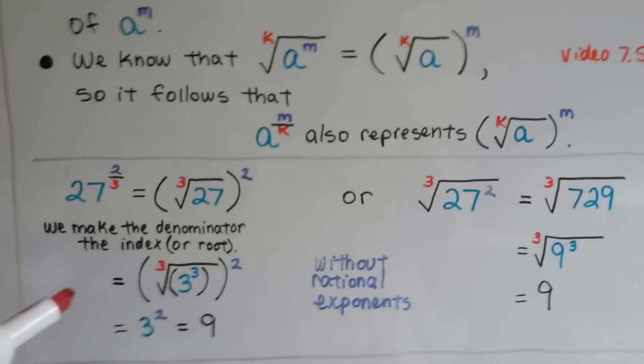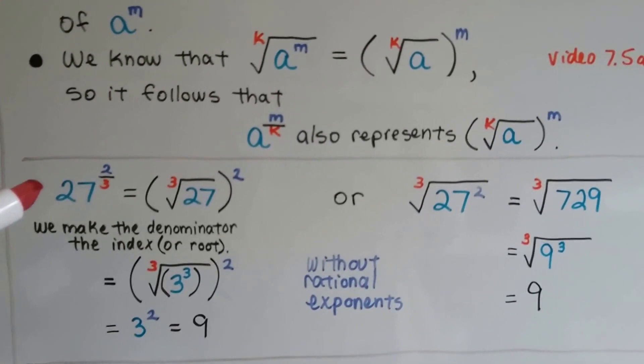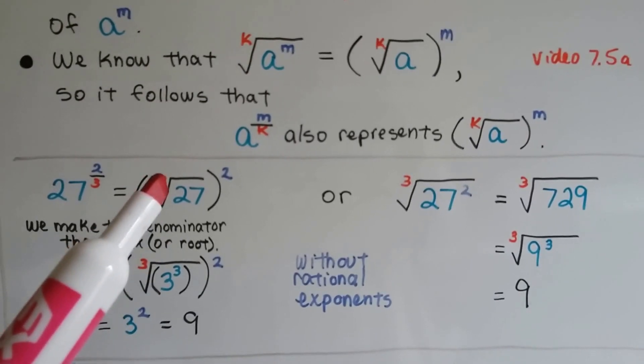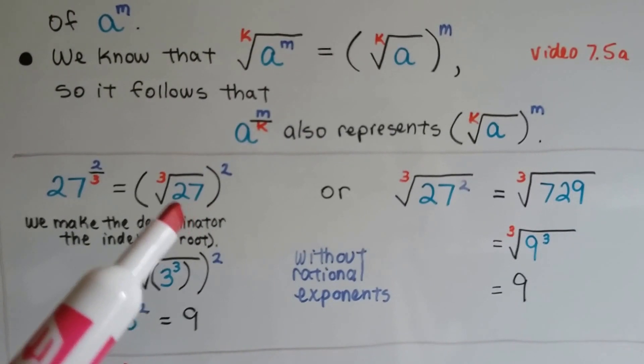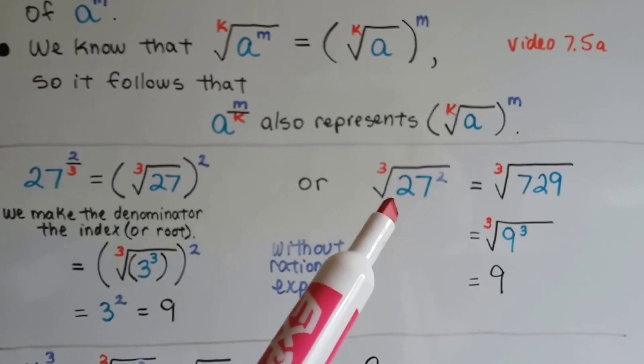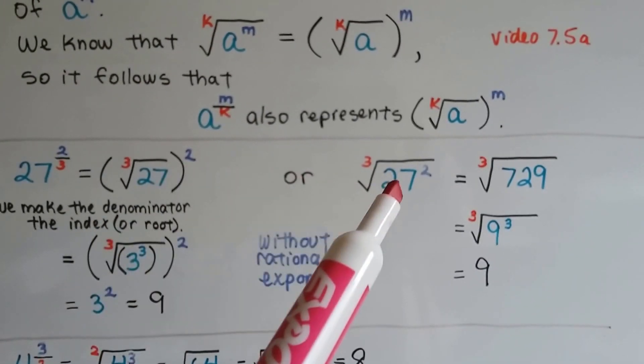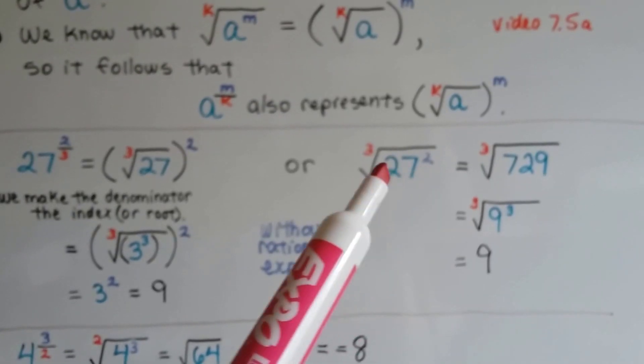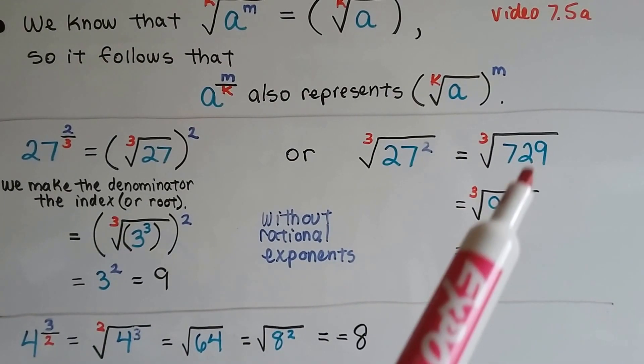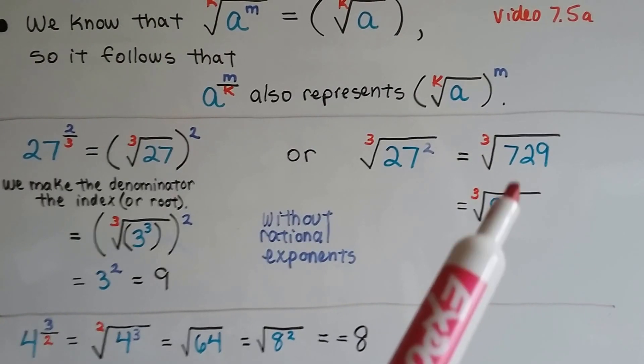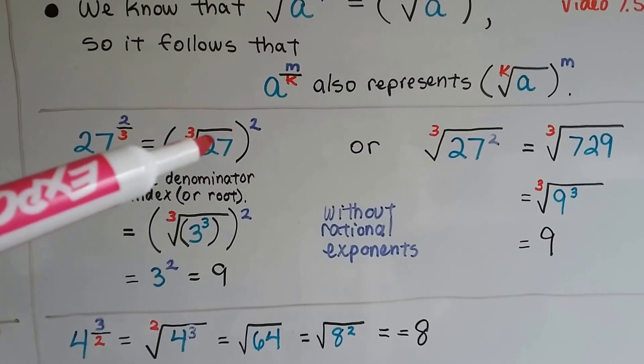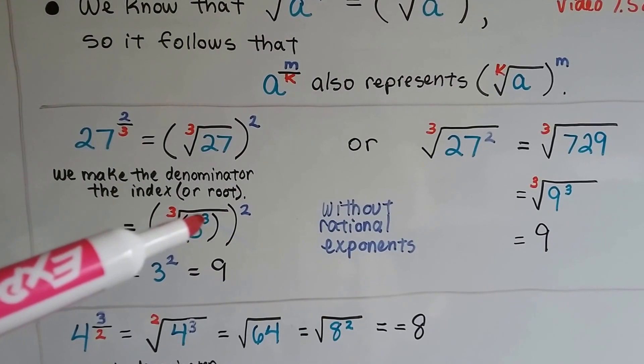We're going to write this without rational exponents. We've got 27 to the two-third power. We can write it as the third root of 27 squared, the cube root of 27 squared. We would just square 27, 27 times 27 is 729. And if we cube this, it's 9 cubed. 9 times 9 times 9 is 729. We remove the radical and the root and the exponent, and it's just a 9.